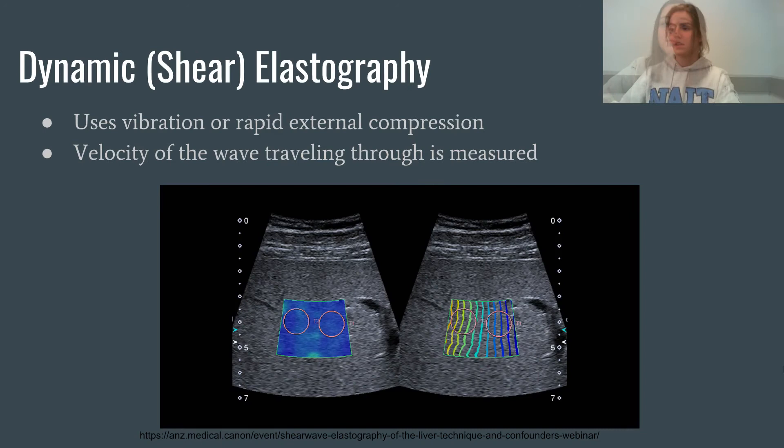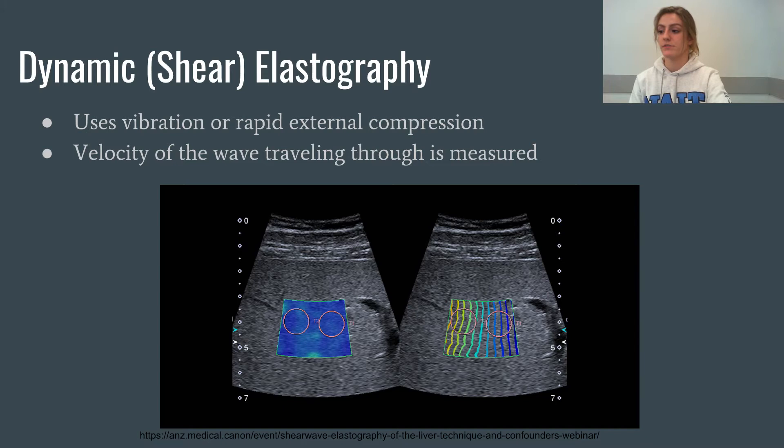Now I'm going to be introducing dynamic or shear elastography. Dynamic elastography uses vibration or rapid external compressions to determine the stiffness of tissue. Unlike with strain elastography, the tissue stiffness is not directly measured through palpation, but rather the perpendicular waves produced by these vibrations are tracked and imaged as they go through the body. The velocity of these waves is then measured, which is used to provide quantitative values that determine the stiffness of tissue.